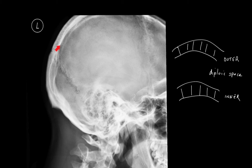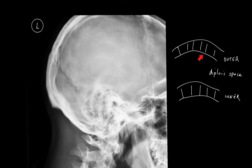This is a lateral skull radiograph. Here is the inner table, here is the diploic space, and here is the outer table of the skull vault. This is depicted in this diagram — here's the outer table, here's the diploic space, and here's the inner table. The key thing to note is that on the diploic side of the inner table the border is convex, and on the diploic side of the outer table the border is concave.